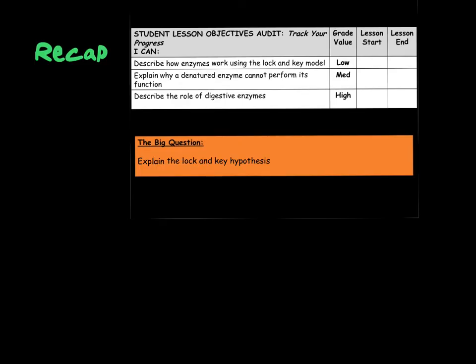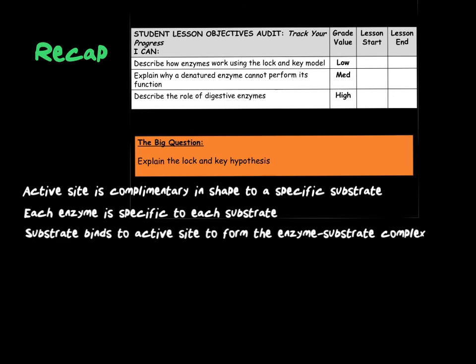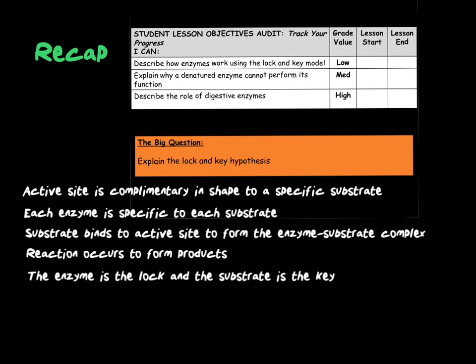In this tutorial video, we have looked at how enzymes work using the lock and key model, explained why a denatured enzyme cannot perform its function correctly, and looked at the role of enzymes in digestion. Our big question was to explain the lock and key hypothesis: the active site has a complementary shape to the specific substrate, meaning each enzyme is specific to one substrate. The substrate binds to the active site to form the enzyme-substrate complex where the reaction takes place, forming the products. The enzyme is the lock and the substrate is the key.